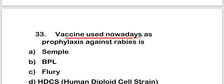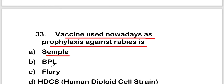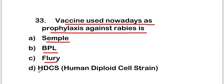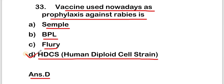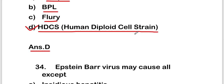The next question: which vaccine is used nowadays as prophylaxis against rabies — Semple, BPL, Flury, or HDCS (human diploid cell strain)? The right answer is option D, HDCS. The vaccine used nowadays as prophylaxis against rabies is the human diploid cell strain rabies vaccine.